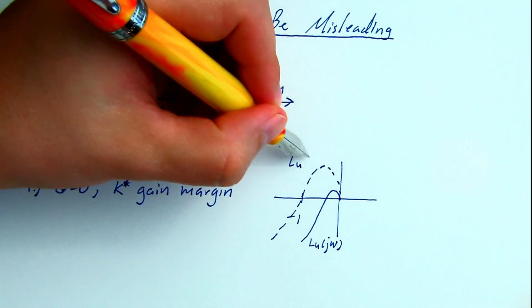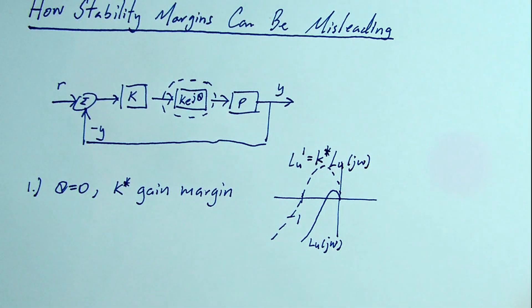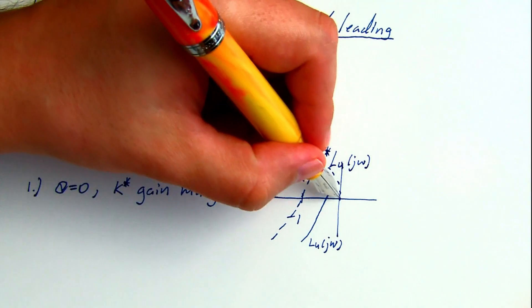Scaling the loop gain by the value k star expands the original loop gain, LU, about the origin.